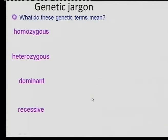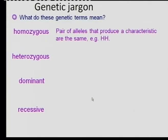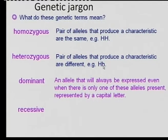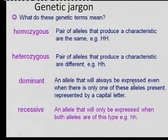Other genetic terms you should know: homozygous is where a pair of alleles both produce a characteristic of the same kind — both capital letters or both small letters in the genotype. Heterozygous is where you find two different alleles. Dominant is the one that is expressed in the phenotype. Recessive does not disappear — it is dominated by the dominant allele, and that is why it is called recessive.